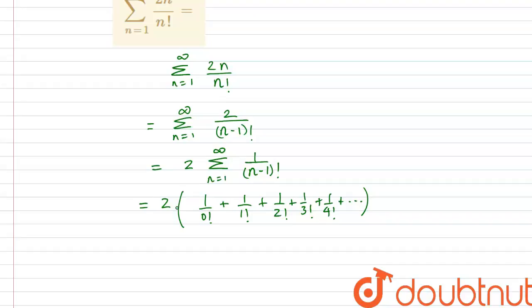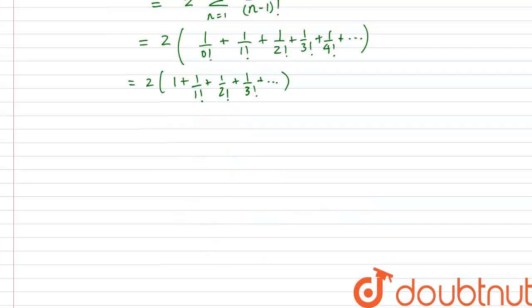So if we write it again, this is 2 into 1 plus 1 by 1 factorial plus 1 by 2 factorial plus 1 by 3 factorial and so on. So now we will make use of this formula that e to the power x is equal to 1 plus x plus x squared by 2 factorial plus x cubed by 3 factorial and so on.